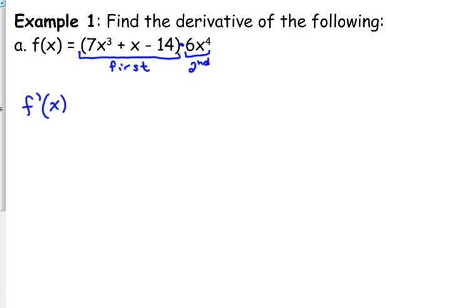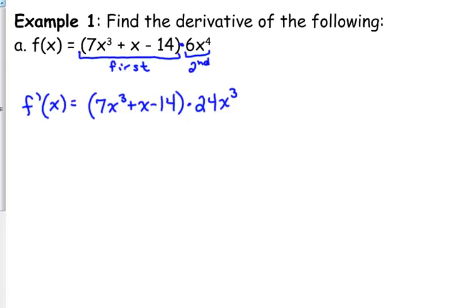f prime of x is equal to the first times the derivative of the second. The derivative of the second would be 24x cubed, plus the derivative of the first — keep it in parentheses — 21x squared plus 1, times the second.